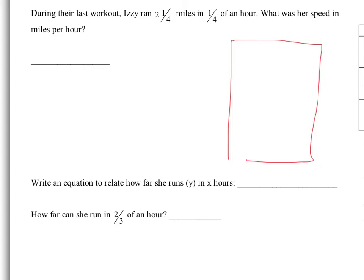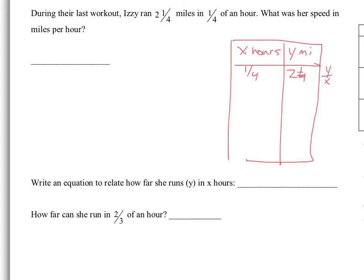I could think about this as a table where X is my hours and Y is my miles. So in this situation, I have that I traveled two and one-fourth miles. If I'm finding my constant of proportionality — my speed in miles per hour — I want Y over X. So I'm going to put two and one-fourth divided by one-fourth.